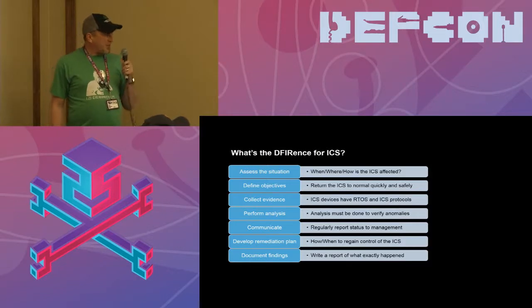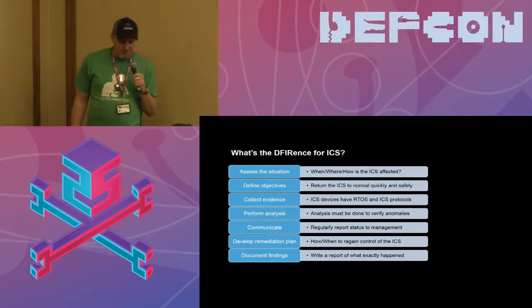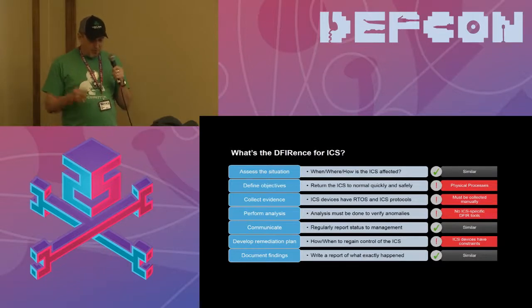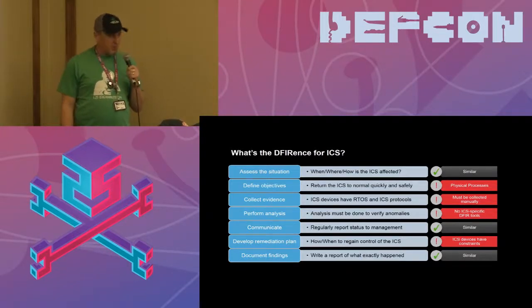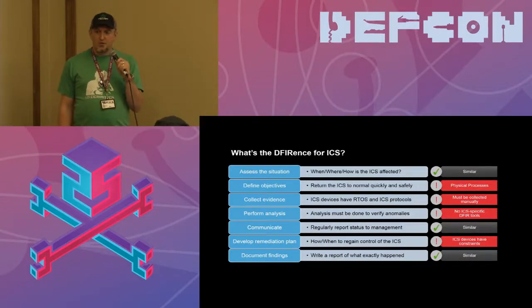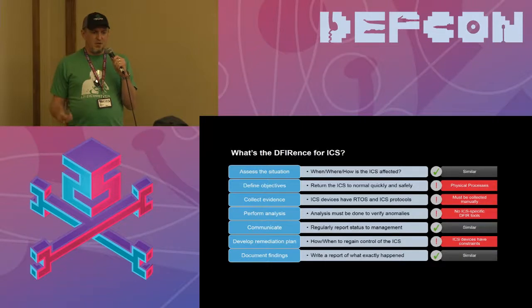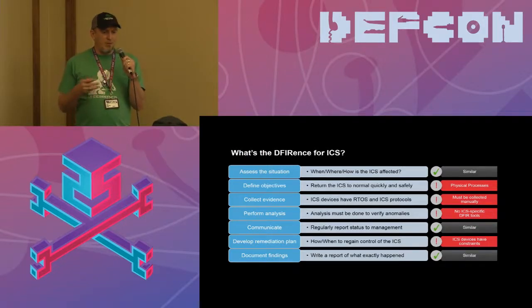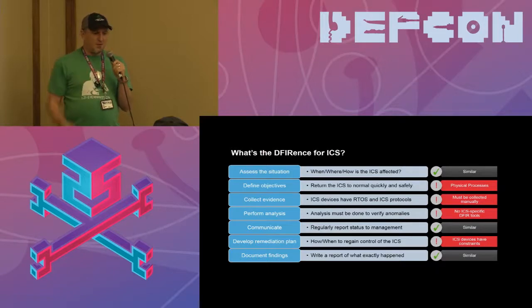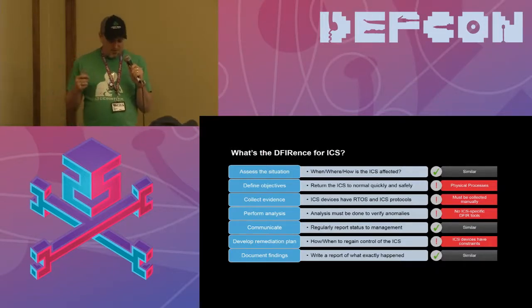For assessing the situation: when, where, how is ICS affected? For defining objectives: return the control system to normal quickly and safely. The difference here is physical processes — it's not just a network or a data center. You have to deal with oil moving in a pipeline, power moving through power lines, water through pipes, or manufacturing facilities where you have a chain of things happening. Those are the things that are going to be important when you do DFIR.